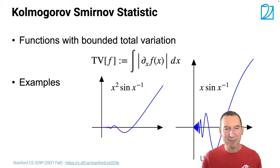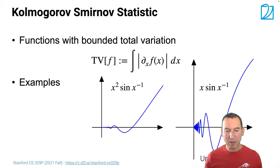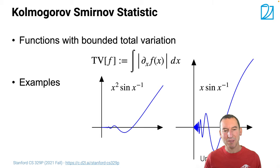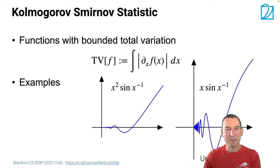For one-dimensional data, things are easier still, corresponding to a statistical tool from the 1930s: Kolmogorov and Smirnov looked at functions with bounded total variation. A function of bounded total variation is one where the integral over the absolute value of its derivative is bounded — that integral is the total variation. Even for discontinuous functions, we can use step functions over smaller and smaller intervals to aggregate overall variation.